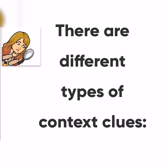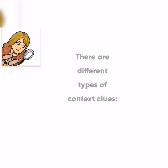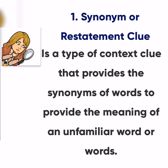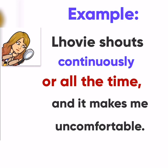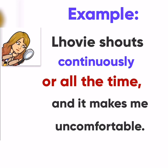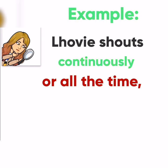There are different types of context clues. Number 1: Synonym or statement clue. It is a type of context clue that provides the synonyms of words to give the meaning of an unfamiliar word. Synonyms are words with the same meaning. For example, the word 'continuously' is a difficult term and the phrase 'all the time' is its synonym.